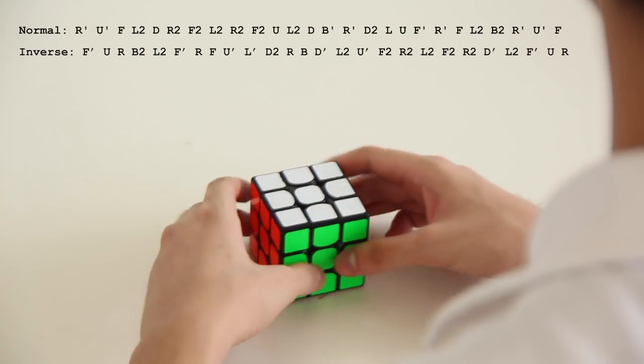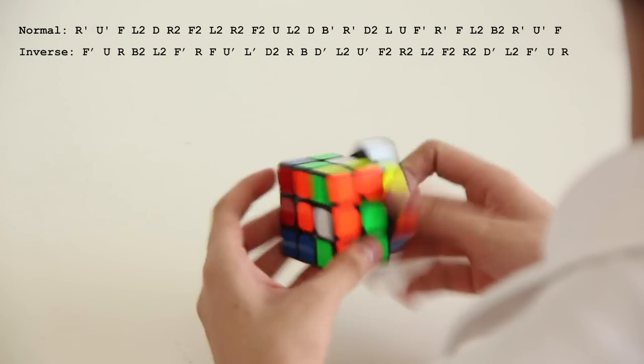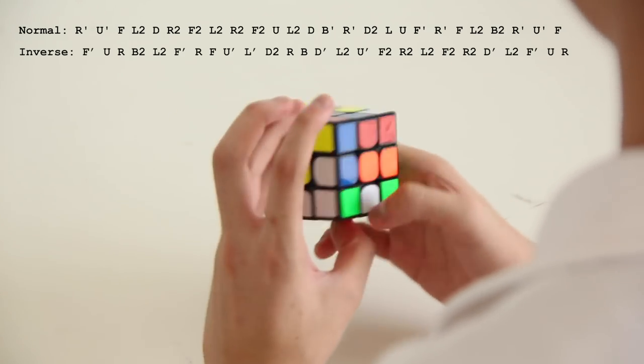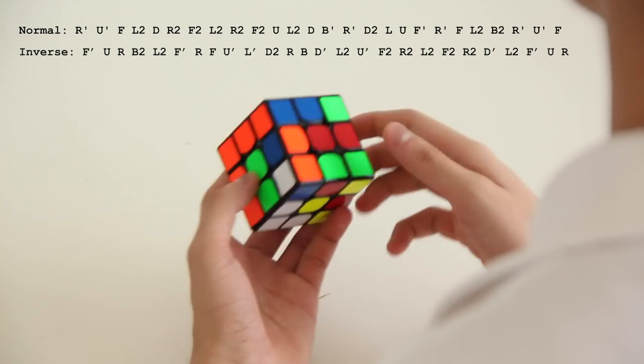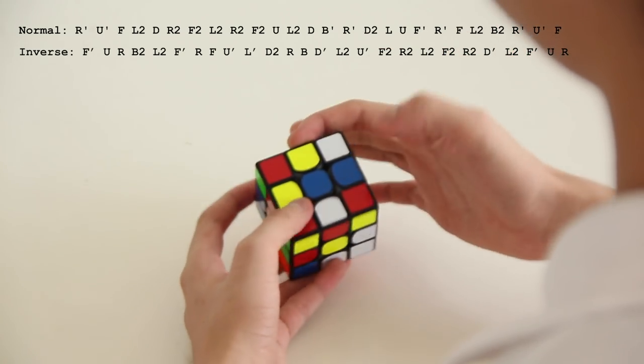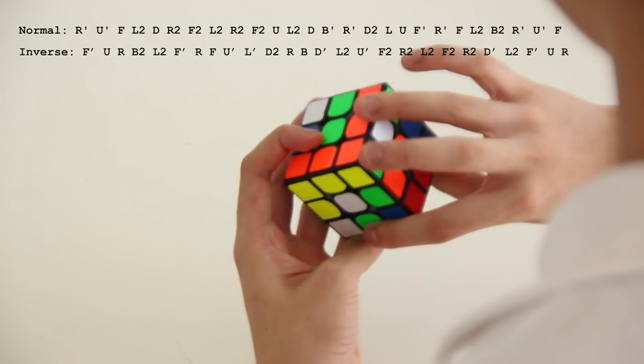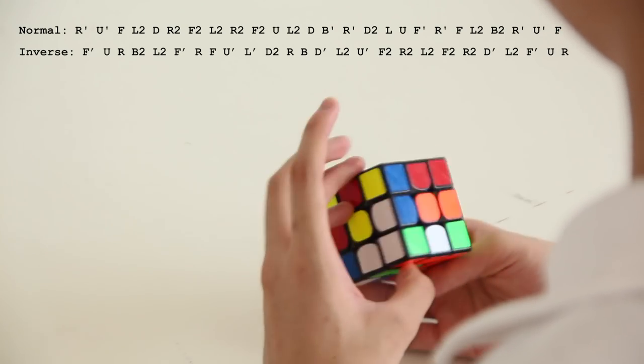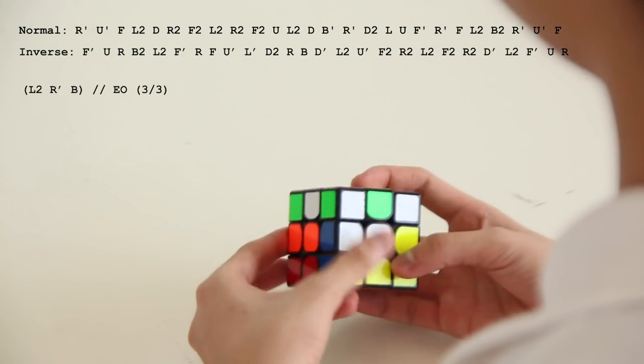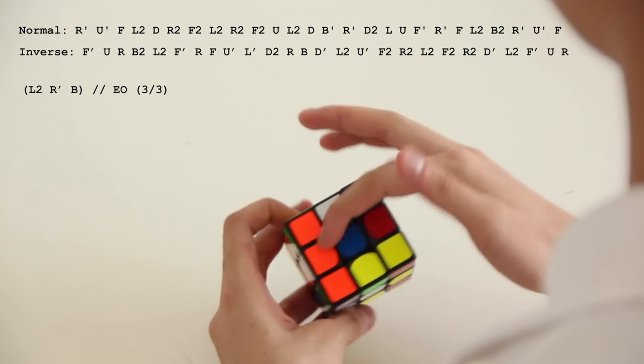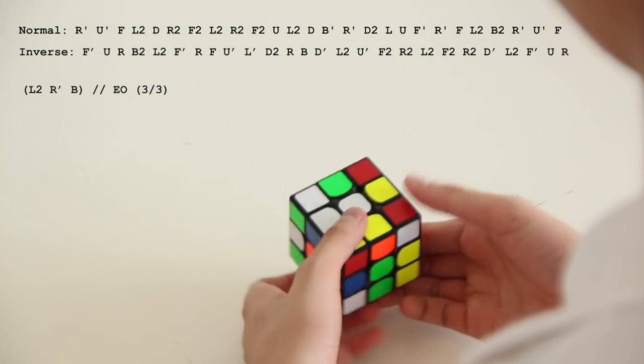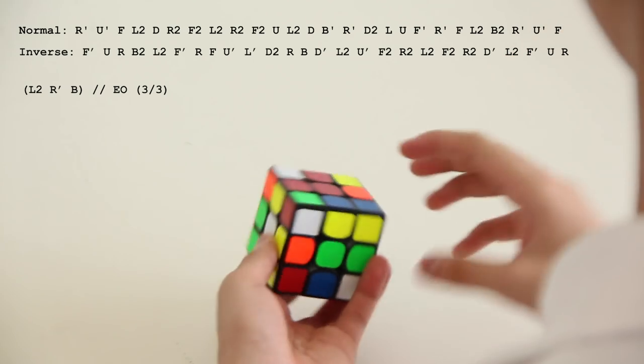In the first solve I started on the inverse scramble. So in the inverse scramble I started with EO. There are four bad edges, which are here, here, here, and here. So this can be easily done by doing L2 and R' to put all of the edges in one face, and then B. So that's a three move EO.